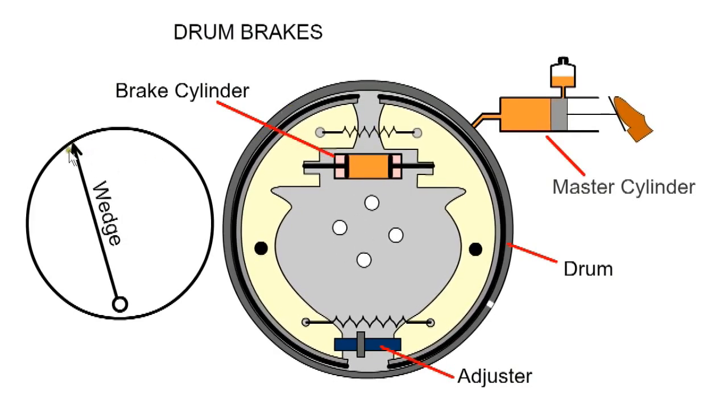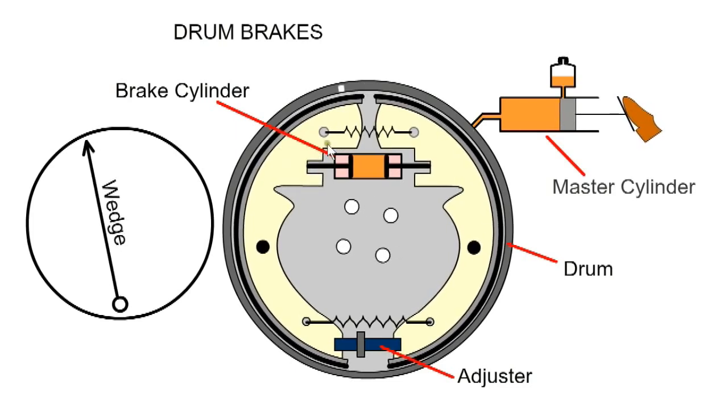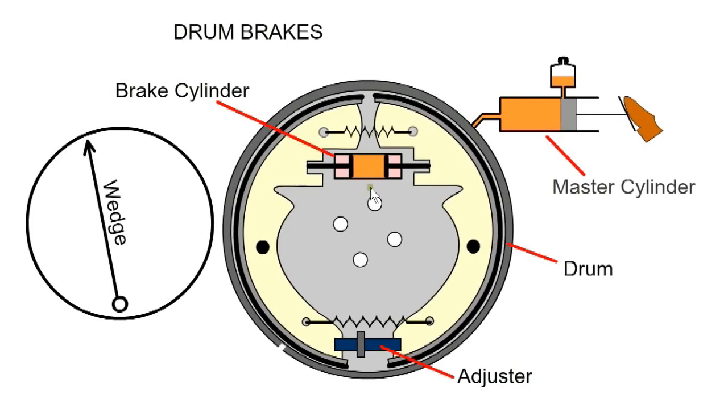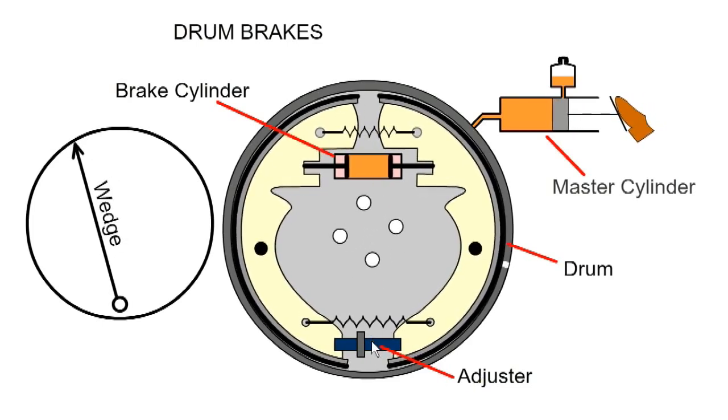When this brake shoe contacts the drum, there is a wedging action, which helps to increase braking force, but it also requires a spring to retract it. When the brake pads wear, the adjuster is used to alter the bottom anchor position.